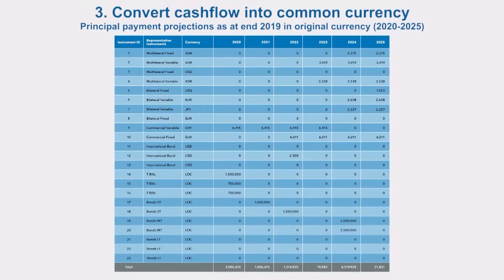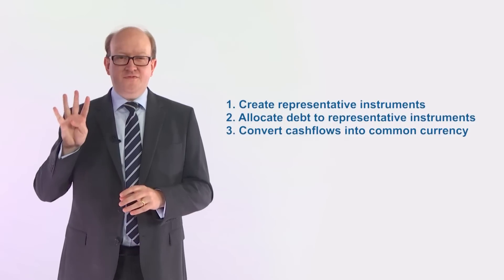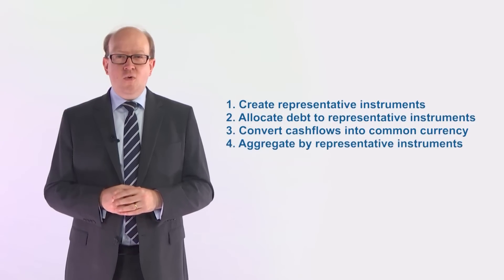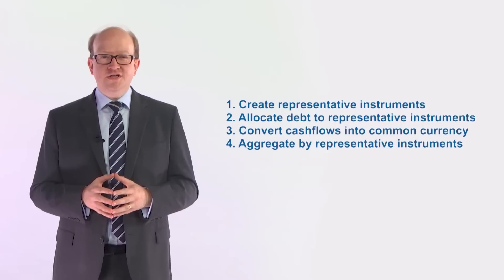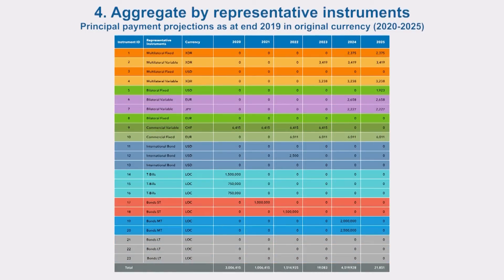Step 3: before we can aggregate by representative instruments, we need to convert all the cash flows into a common currency. To do so, we use the exchange rate at the end of 2019. Step 4: aggregate by representative instruments. Once all instruments are in a common currency, we are ready to aggregate. Looking back at the existing debt portfolio, we can shade each of the underlying debt instruments with a different color to show which representative instrument they are to be aggregated under.